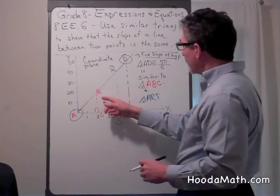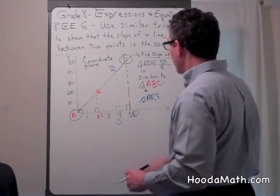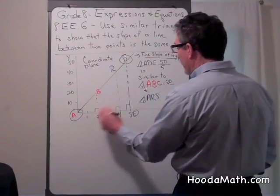The slope of the hypotenuse will be the change of y, which is 20, over the change of x, which is 2.